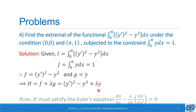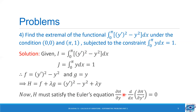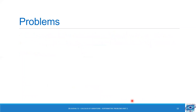So h must satisfy the Euler's equation: partial derivative of h with respect to y minus d/dx of partial derivative of h with respect to y' equal to 0. The partial derivative of h with respect to y' will be 2y'. On substituting these values we get minus 2y plus lambda minus d/dx of 2y' equal to 0.